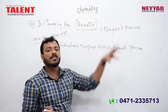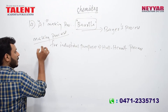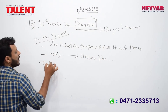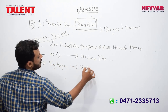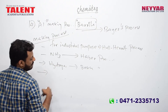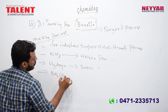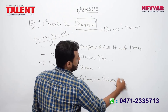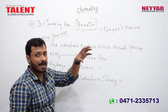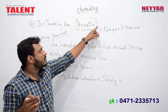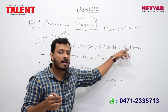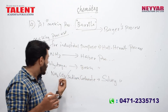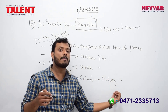Ammonia is made by the very famous Haber process. Hydrogen is made by the Bosch process. Sodium carbonate (Na₂CO₃) is made by the Solvay process.